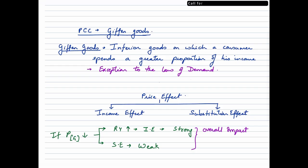So as you can see on the slide, Giffen goods are inferior goods on which a consumer is spending a greater proportion of his income. Another important thing, they are an exception to the law of demand.